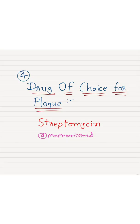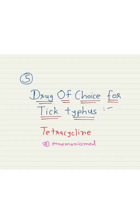The drug of choice for plague is streptomycin. You have to remember streptomycin for the drug of choice for plague. The drug of choice for tick typhus is tetracycline. You have to remember tetracycline for the drug of choice for tick typhus.